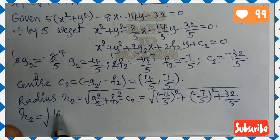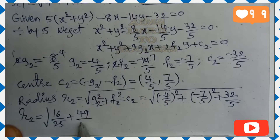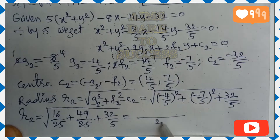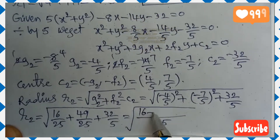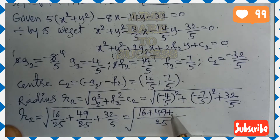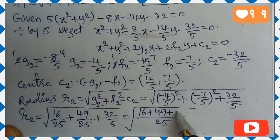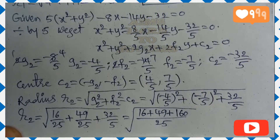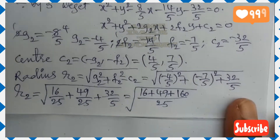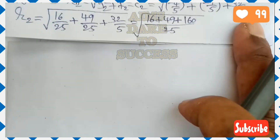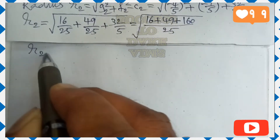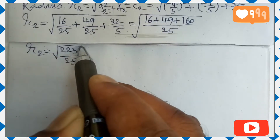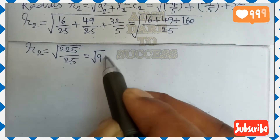Taking the LCM of 25: 16/25 + 49/25 + 160/25 = 225/25. So r₂ = √(225/25) = √9 = 3. Therefore radius r₂ = 3 from the second circle.